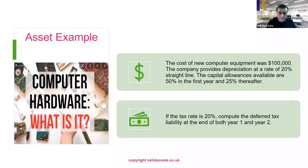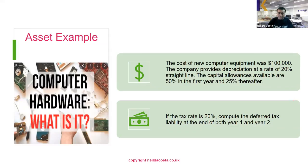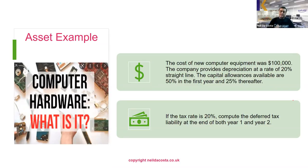Let's look at an example. We're buying computer equipment costing $100,000. The company provides depreciation at 20% straight line, so each year the depreciation expense is $20,000. For capital allowances — the tax depreciation — it's 50% in the first year and 25% thereafter. These are accelerated capital allowances because the government is trying to stimulate commercial investment. The tax rate is 20%, and we need to compute the deferred tax liability at the end of year one and year two.